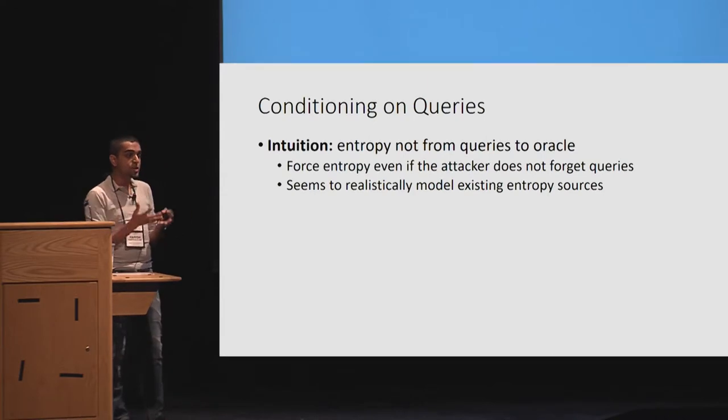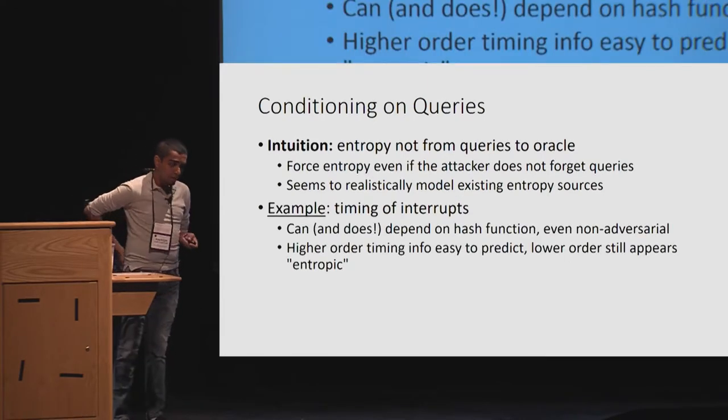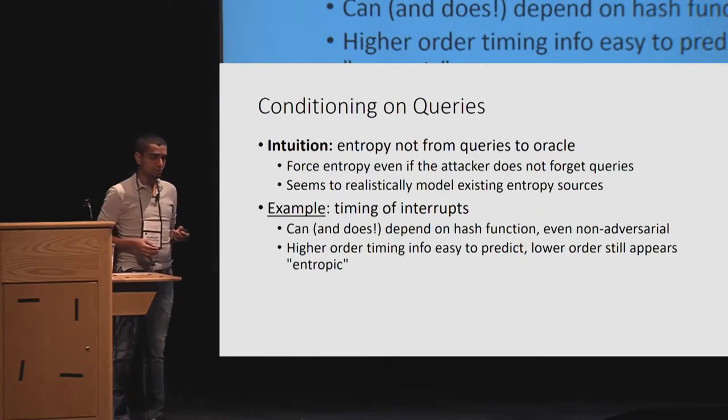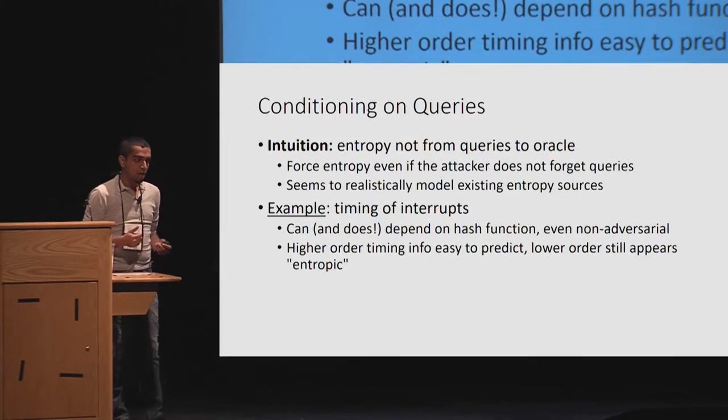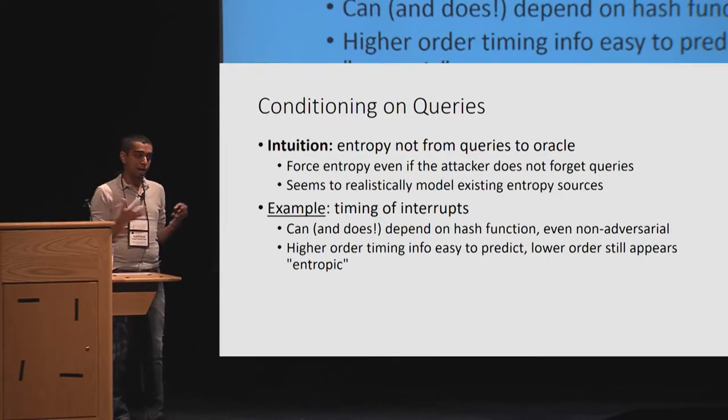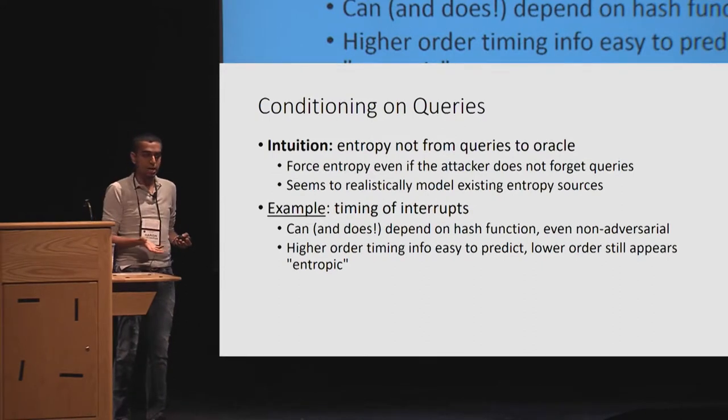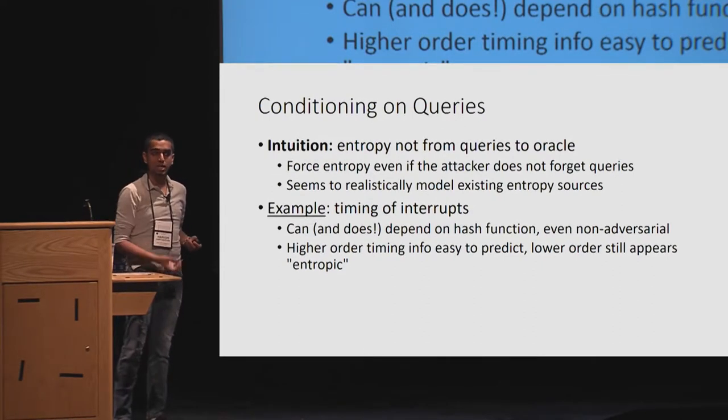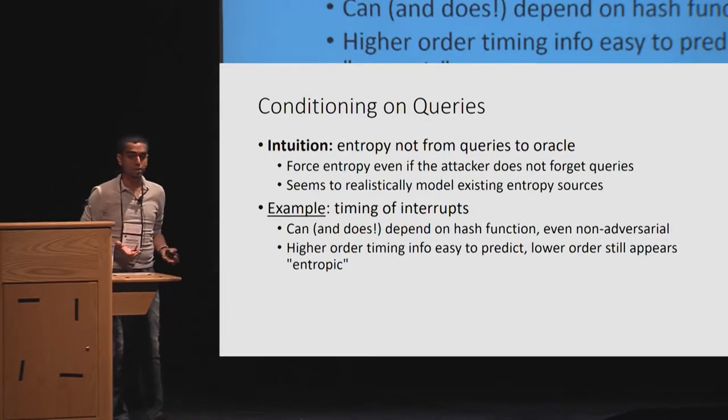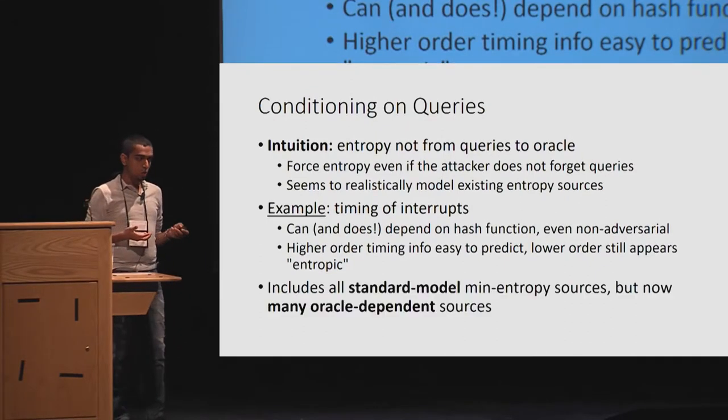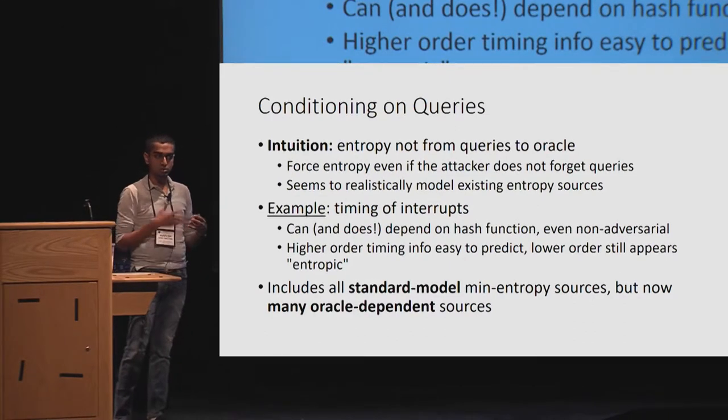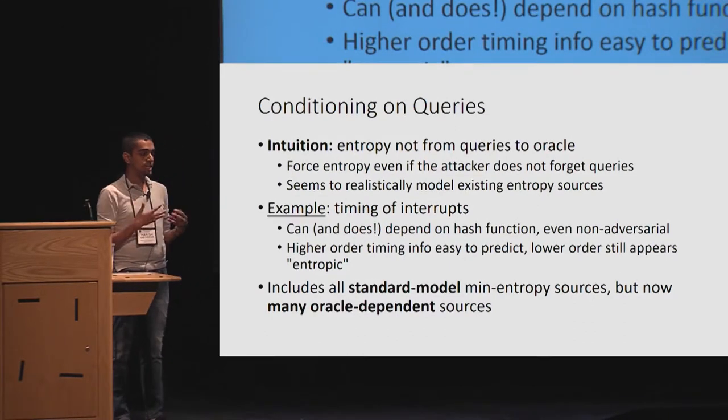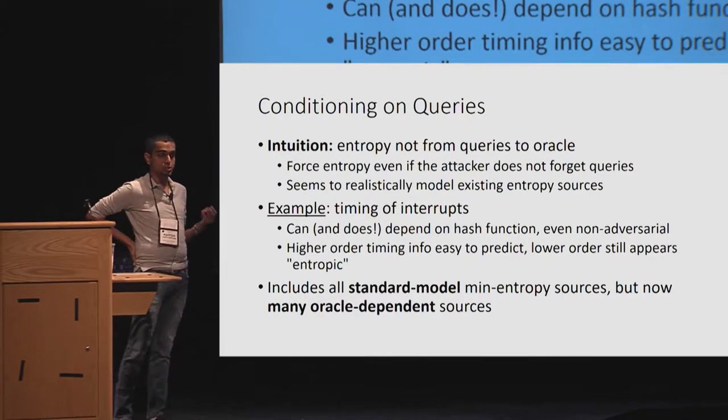For example, let's consider timing of interrupts. Clearly, as we discussed before, it can and does depend on the hash functions, even in a non-adversarial manner. The higher-order timing info might be easy to predict, but as of the low-order, it still appears entropic because the timing of the system is independent of the running of the hash function. What we end up with is a larger pool of sources in addition to the standard model main entropy sources. We actually now have many Oracle-dependent sources as well.